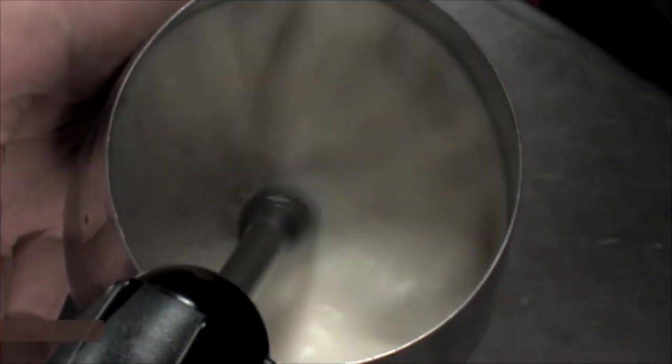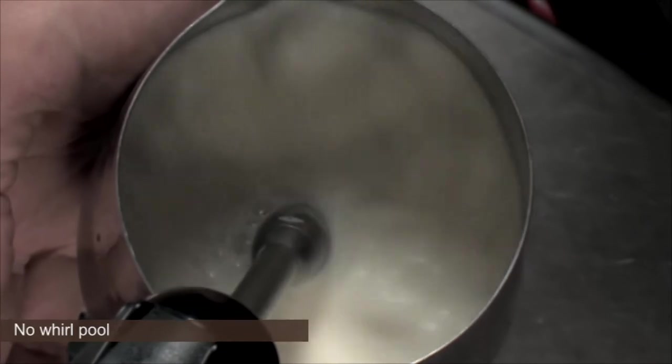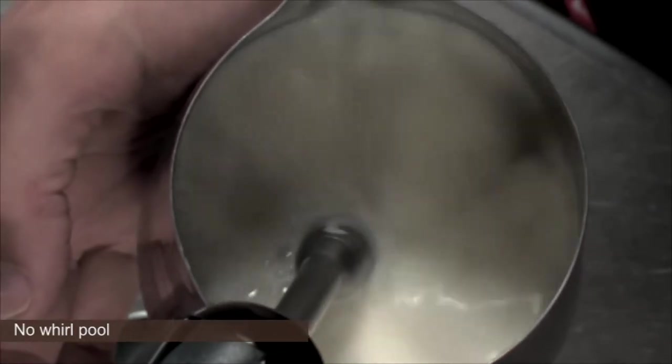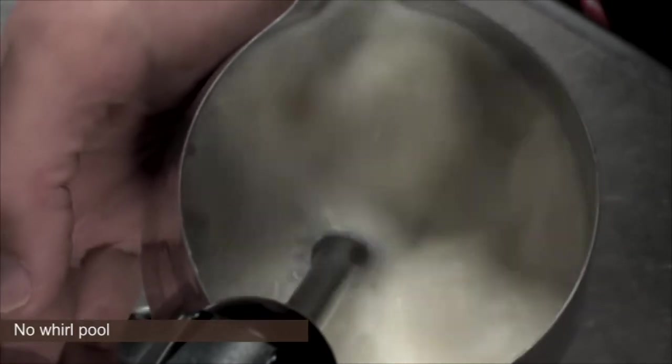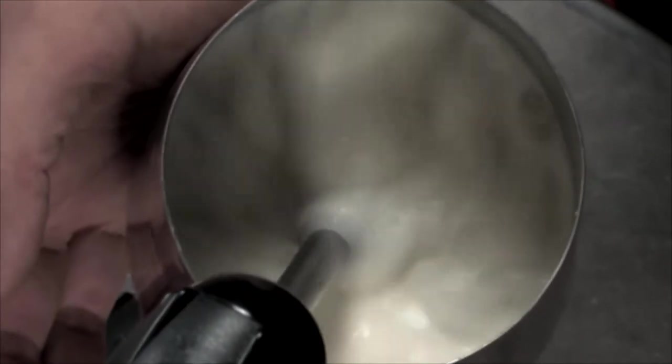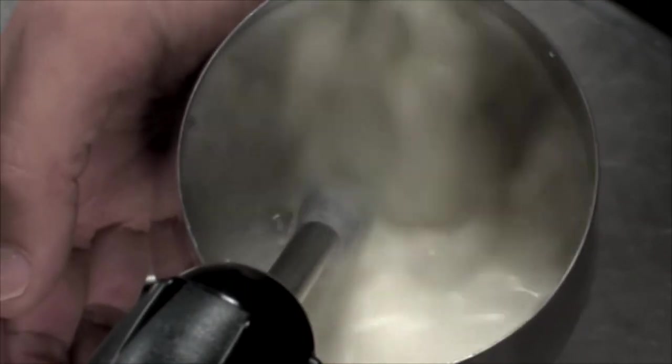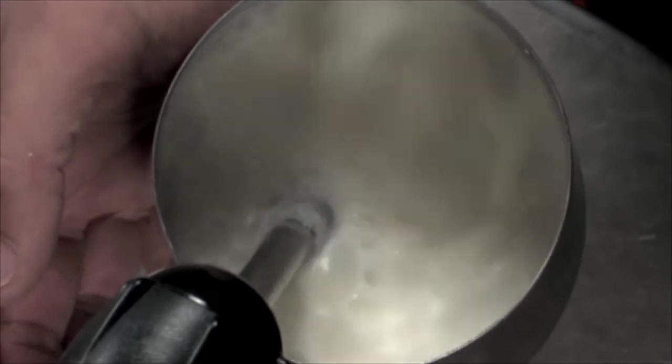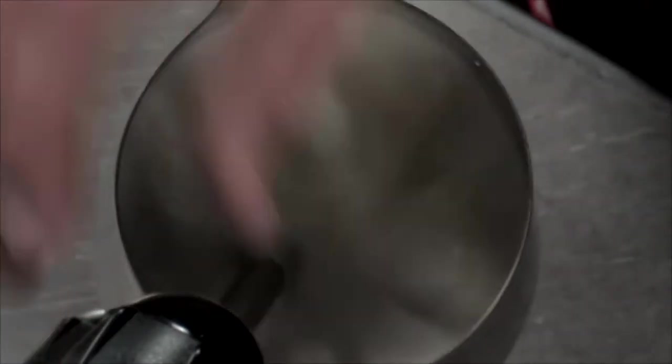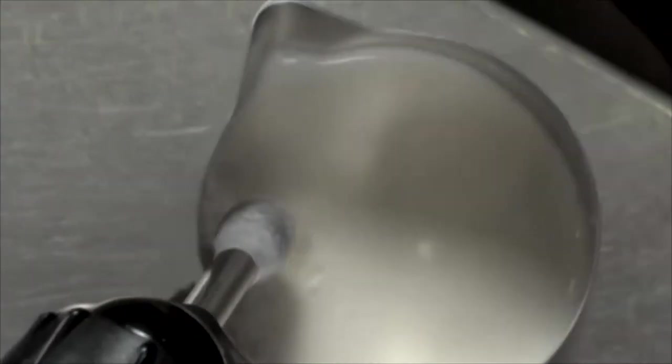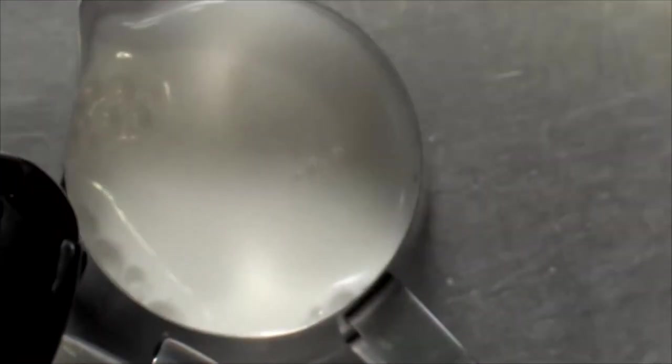Another common problem with people learning how to froth milk is they don't get the whirlpool going properly. And that's usually caused because they've got the steam wand too close to the centre of the milk as you'll see here. So what's happening is the milk is rolling over the top of itself but it's not rolling in a whirlpool. So you end up with a big entrapment of big bubbles sitting on the surface of the milk. That's going to be hopeless because they're never going to get in a whirlpool and spin around and thin out.